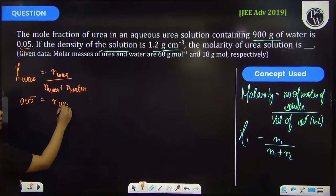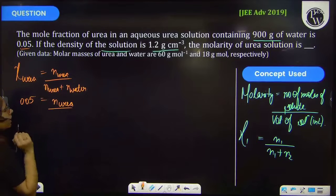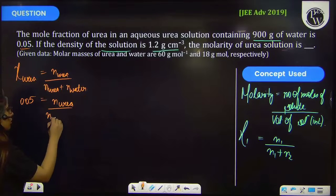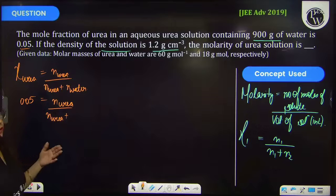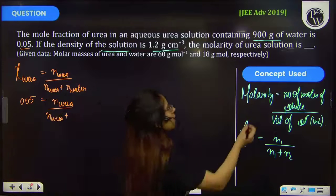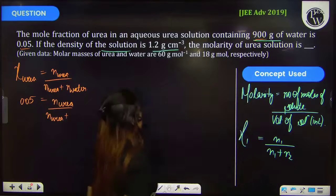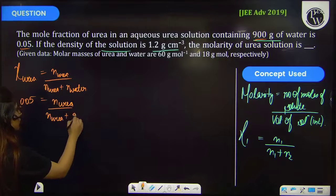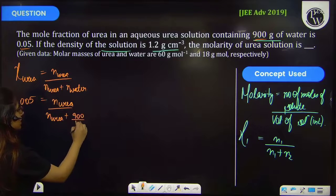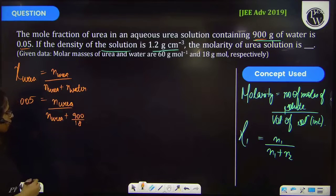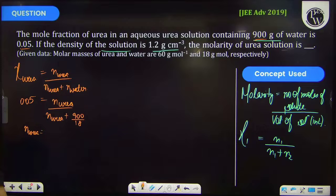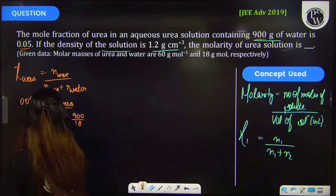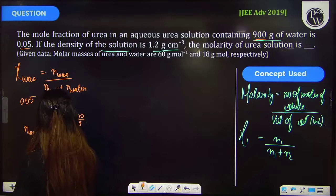The number of moles of urea you have to calculate. The number of moles of water will be equal to given weight divided by molecular weight — given weight is 900 grams and molar mass is 18. On solving this, you will get the number of moles of urea as 2.63 moles.